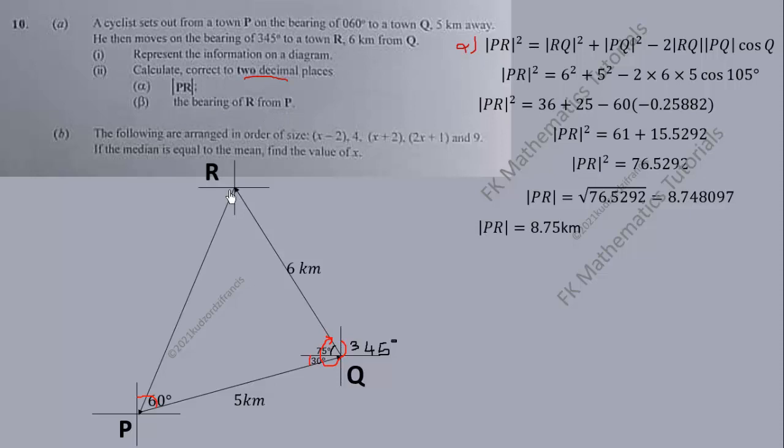So for the bearing aspect, the bearing of R from P means we start measuring the angle from P until we touch the line connecting R and P. So we start from here until we meet here. We are finding this angle. That is the bearing of R from P.